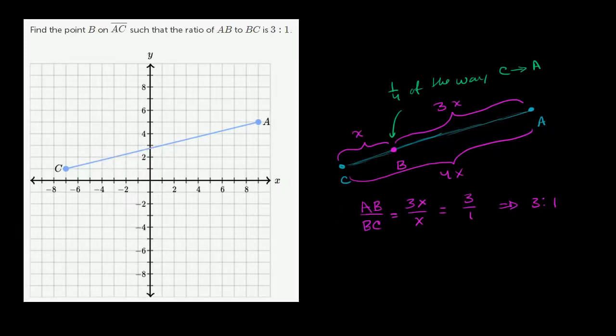So for example, the horizontal change between A and C. A is at 9 right over here, and C is at negative 7. So this distance is 9 minus negative 7, which is equal to 9 plus 7, which is equal to 16. And you see that here. This total distance is 16. That's the horizontal change going from A to C, or going from C to A.